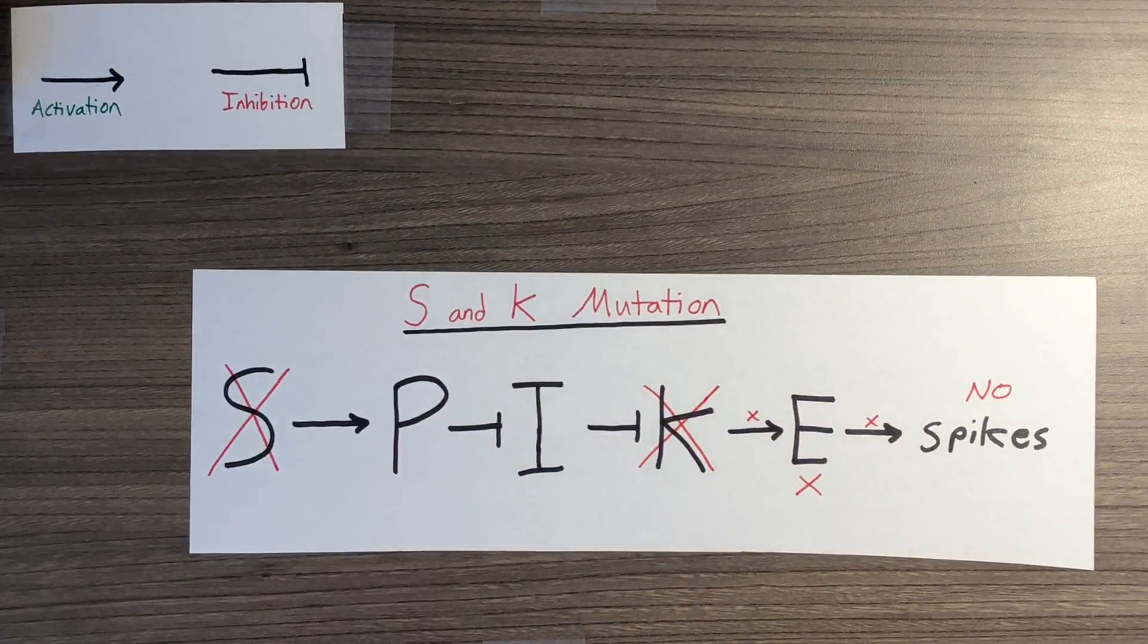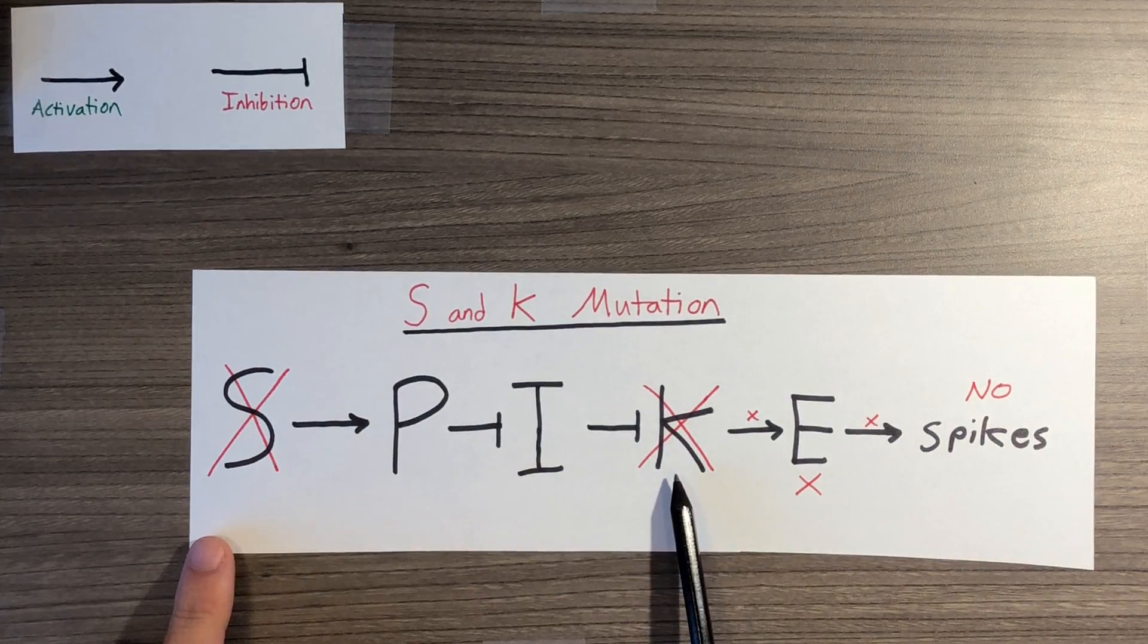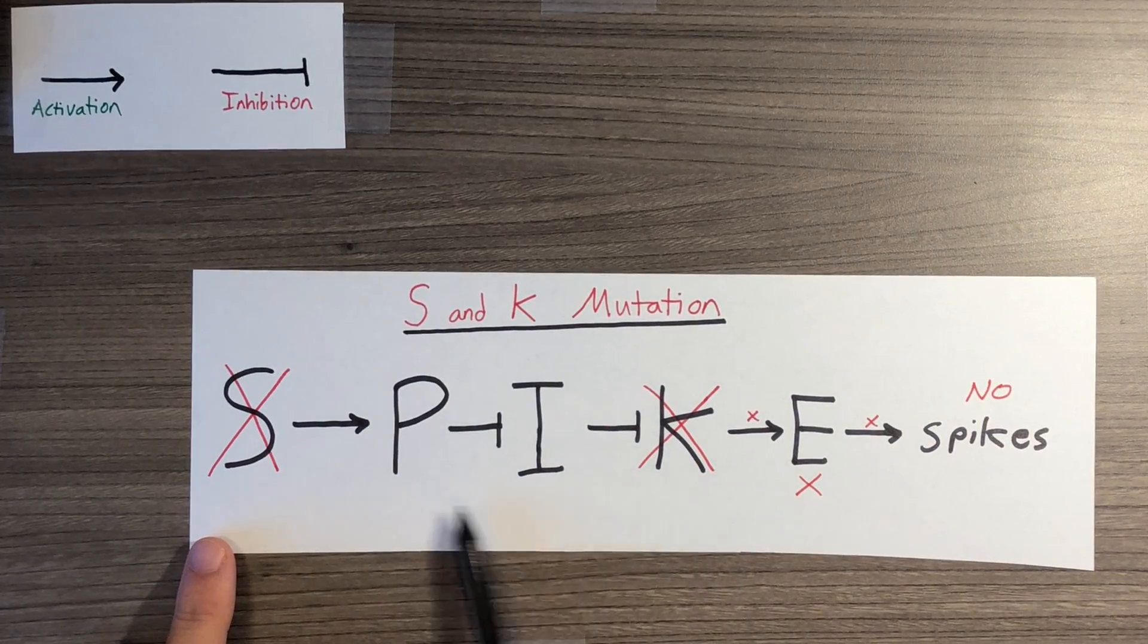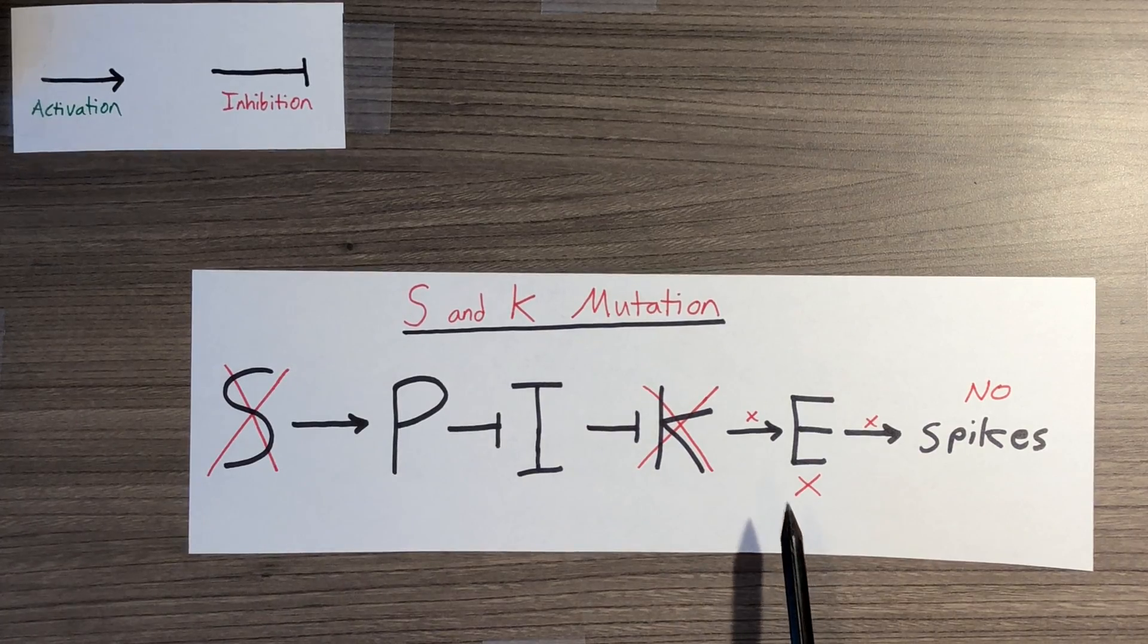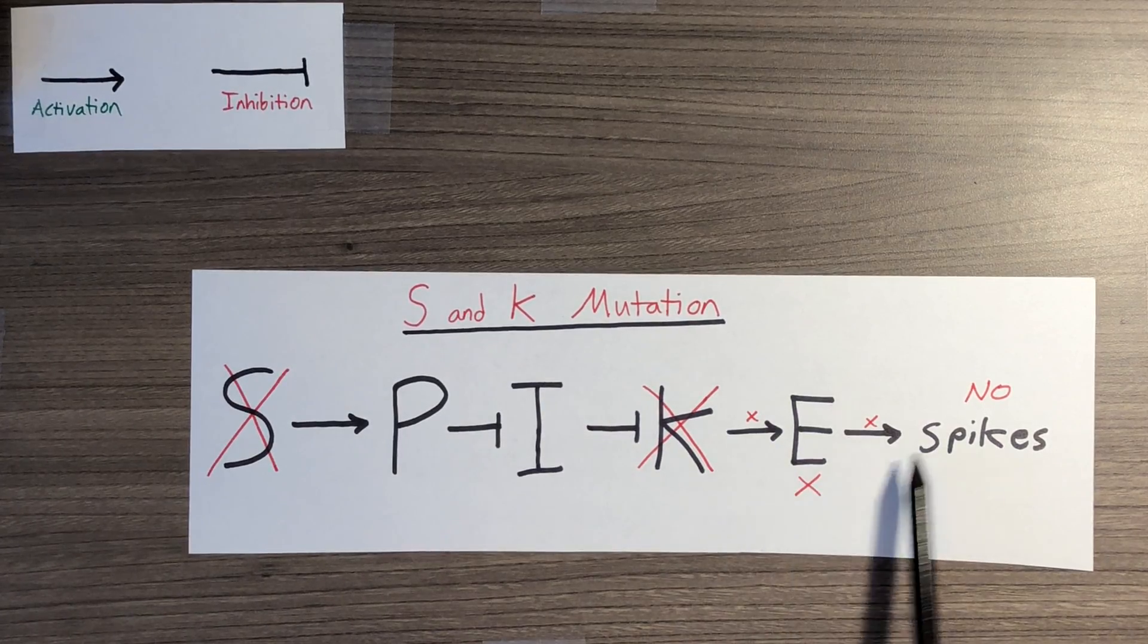This time, we have another double mutant for S and K genes. Since the K gene is further downstream in the network, we do not have to worry about anything that comes before it. Without K, E will not be stimulated, meaning the skin cells will not produce spikes.